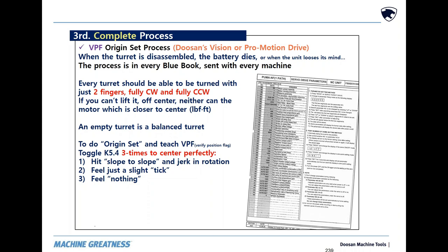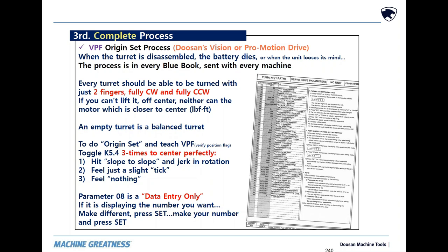The process that seems to work every time to do an origin set and teach VPF is to toggle K5 bit 4 three times to center it perfectly. On the first time, you hit a slope-to-slope and it will jerk the turret into rotation. The second time, you'll feel just a slight tick. The third time, it'll be, did that even move? When setting parameter number 8 to do an origin set, that parameter is a data entry only parameter. If parameter number 8 displays 3 and you want to set it to 3, you must change the number to 2, 4, anything else, and press Set. Then change it back to the 3 you're requiring and press Set again, so it will actually enter it.